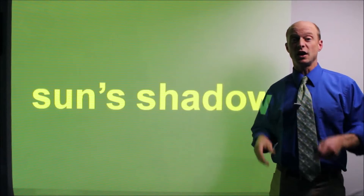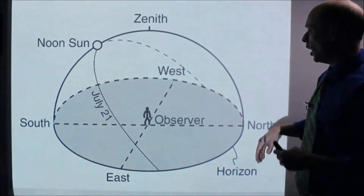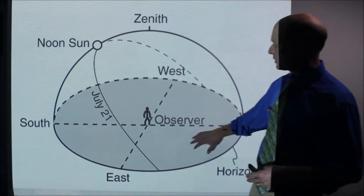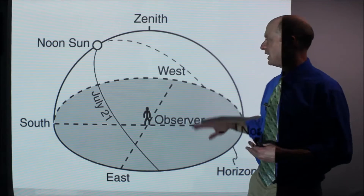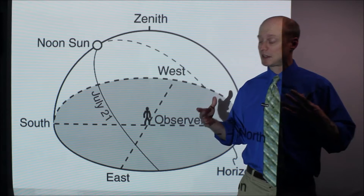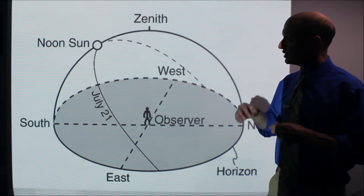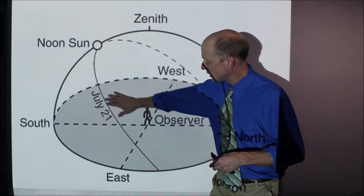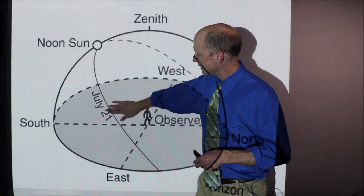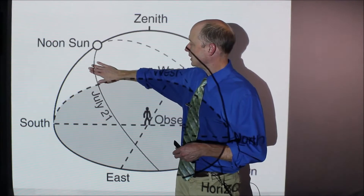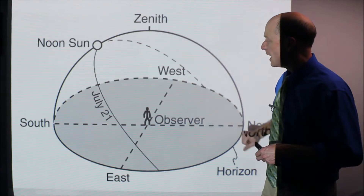The shadow created by the Sun. So what we have here is the surface of Earth, here's an observer, and this shows the Sun's path. Now obviously this is not the sky — it's trying to represent the sky. It shows the Sun's path during the day, in this case July 21st. As the Sun rises, it moves throughout the morning like this. Solar noon is here and then sunset is over here.